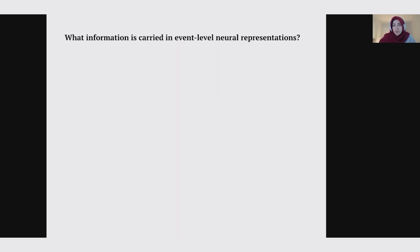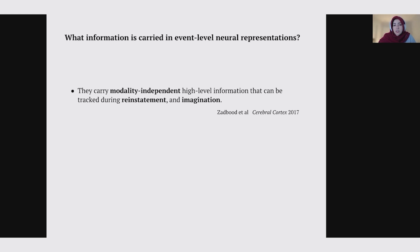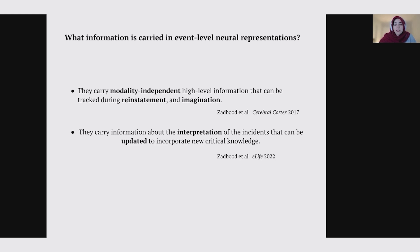In this talk, I will describe three studies that have used this method to study the nature of event-level neural representations. I won't go over all the details; I will just highlight the most relevant points. In the first study, I show that these neural representations carry modality-independent and high-level information that can be tracked during re-enactments and imagination of those episodes. Then I will show they have fine-grained information about interpretation — subtle changes in interpretation of events — and they can be updated to incorporate new information. Finally, I will show they also carry information about the emotional state of participants.